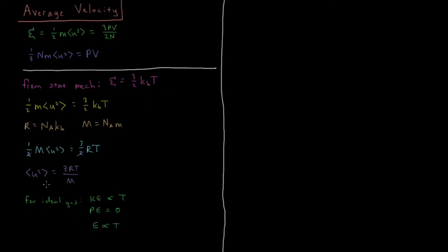And now we're going to take this value of the average square velocity and we're going to define a new quantity called the root mean squared velocity.